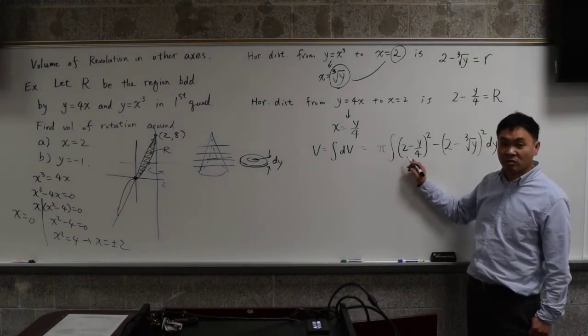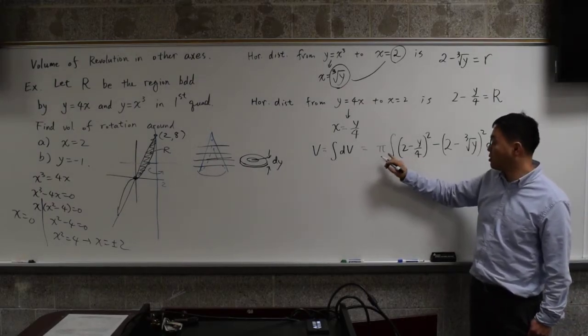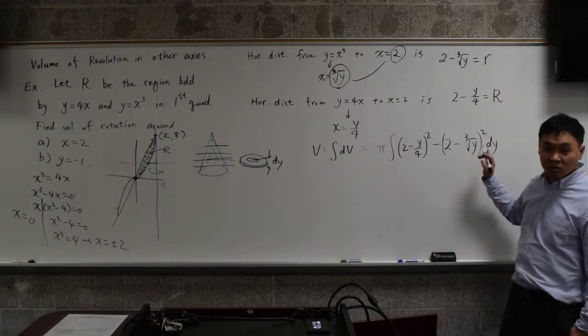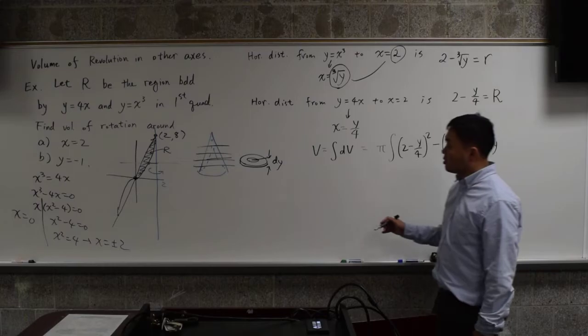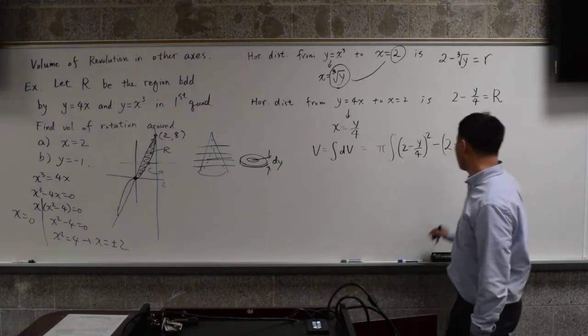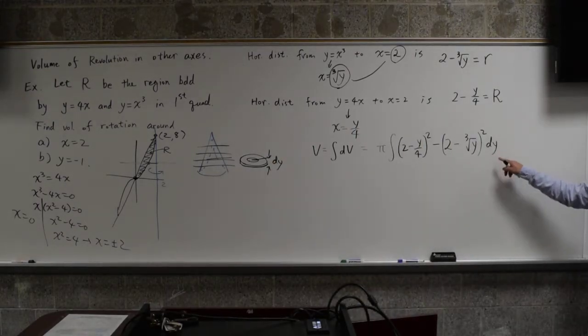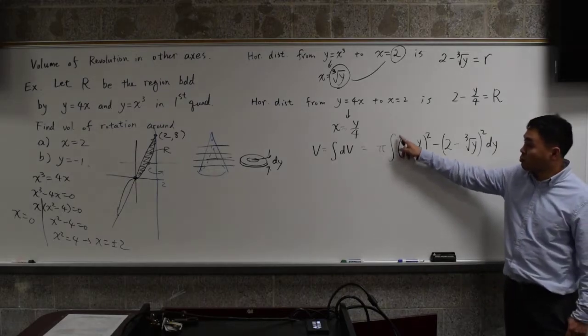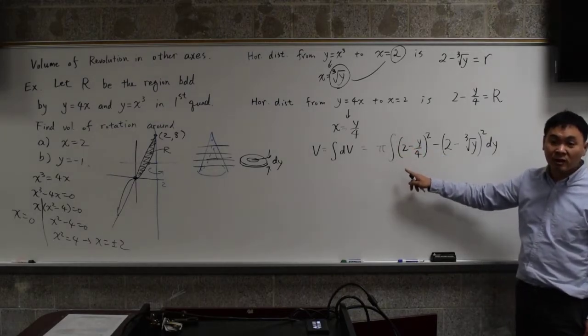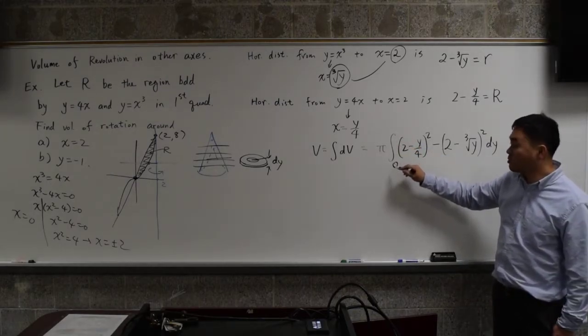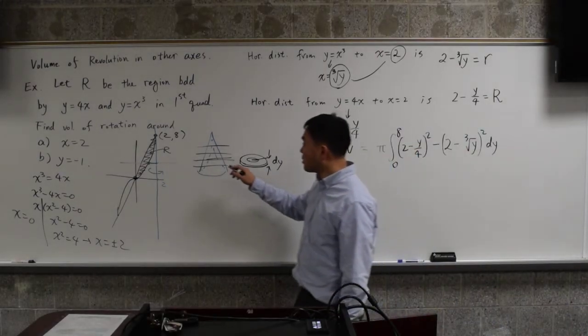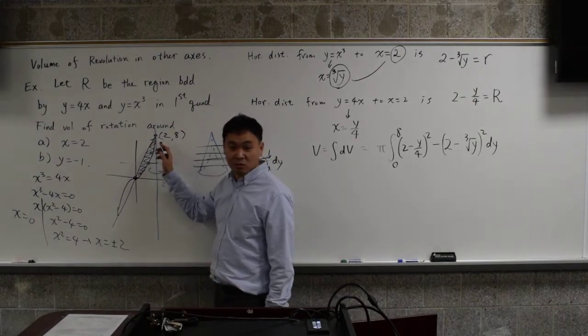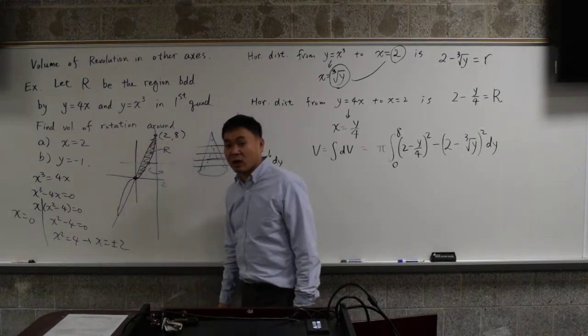Pi big R squared is the area of the big circle. Pi small r squared is the area of the small circle. So if you subtract them, you get the area of the washer. And you're multiplied by dy to thicken it. And now y goes from where to where. What's the least value of y? 0. Maximum value of y? 8. That's why we have to figure out this coordinate. Because this is 2, 8, we know that y goes up to 8.